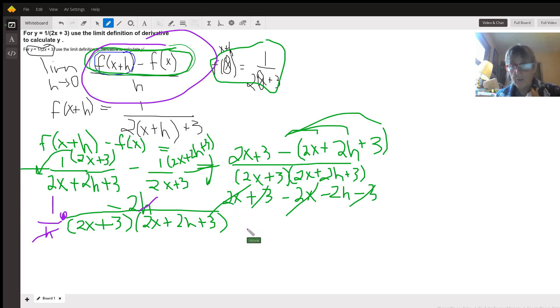And now this fraction, which I'm going to put on the next board before I take the limit, simplifies to this. Well, I don't have to. Our fraction simplifies, let me make more space, to negative 2 over 2x plus 3 times 2x plus 2h plus 3.